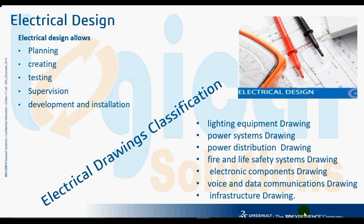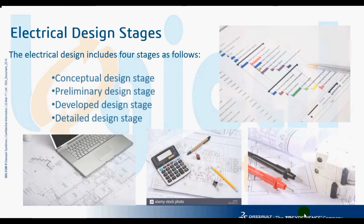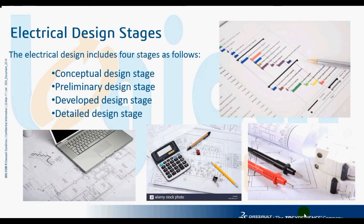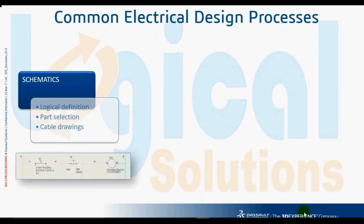Infrastructure drawings are also a type. There are generally four stages in electrical design. The conceptual design stage is about project planning and producing ideas. The preliminary design stage covers overall system configuration. The develop design stage, also known as shop drawing, depends upon client and consultant approval. The detail design stage, also known as as-built drawing, is the final stage of the drawing.